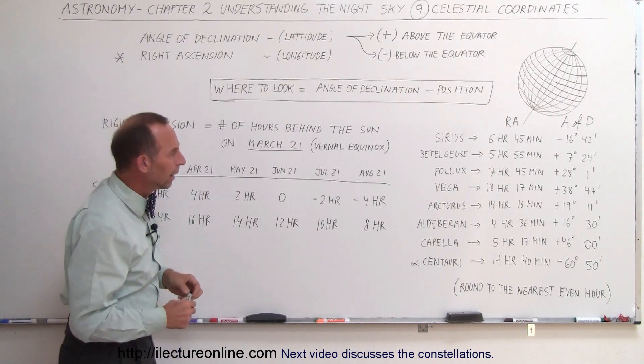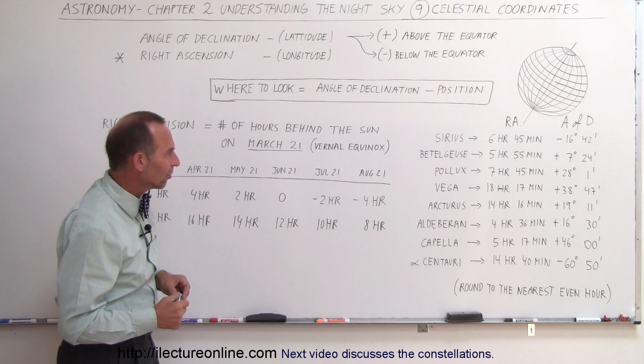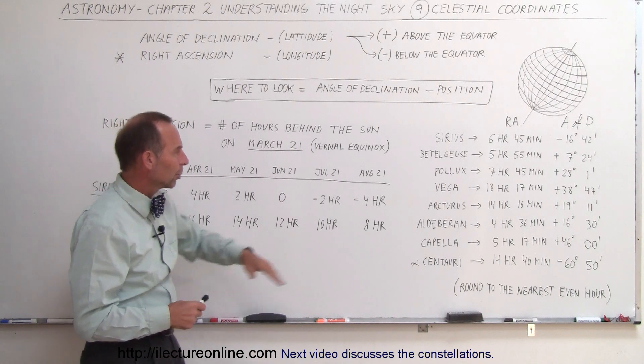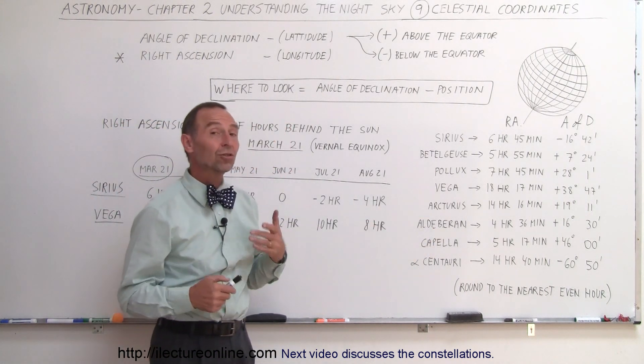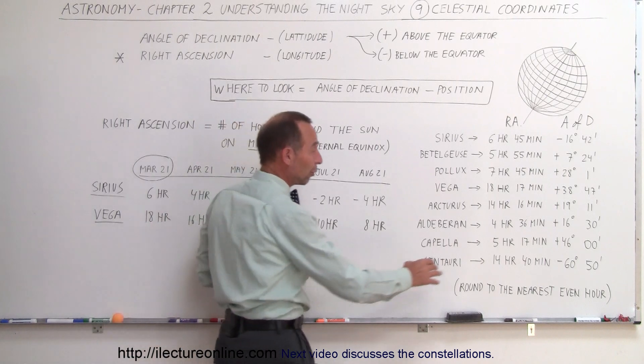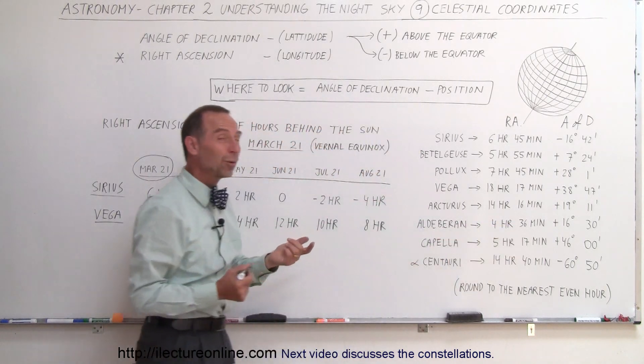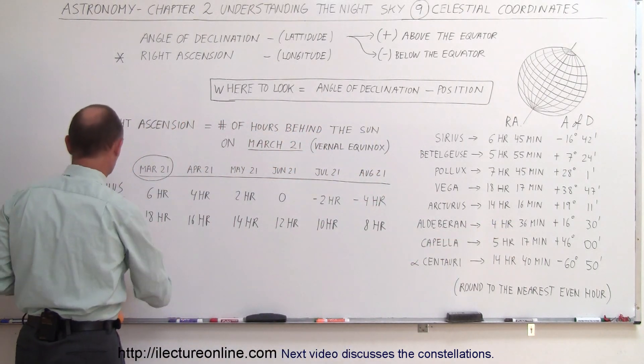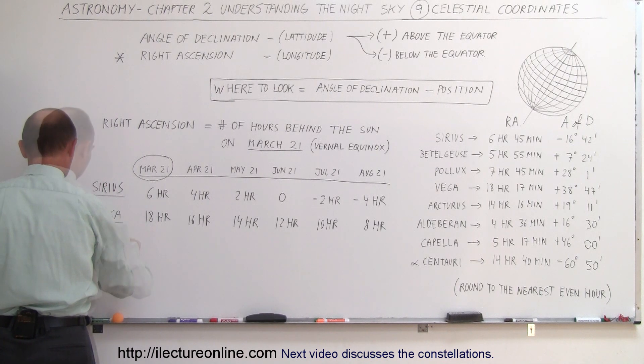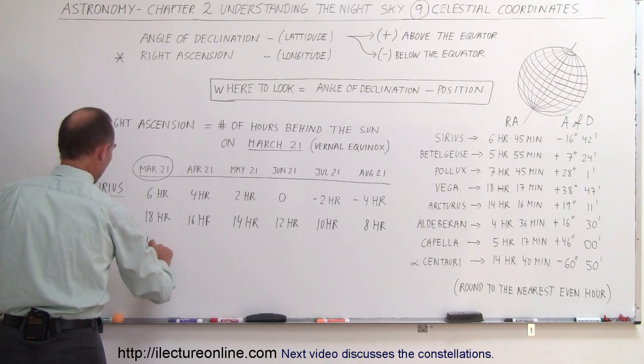Let's do one more. Let's see here, I want to see Aldebaran. That's part of the constellation Taurus, and it's 4 hours behind the Sun, and of course, that would be on March the 21st, so Aldebaran.